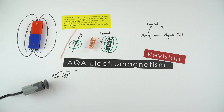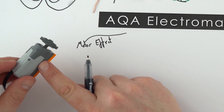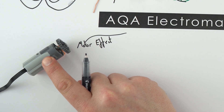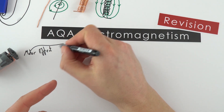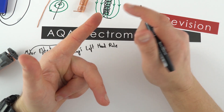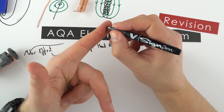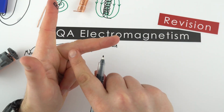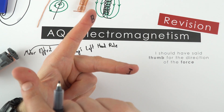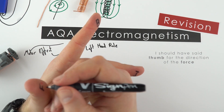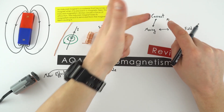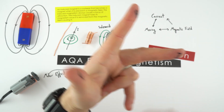The motor effect is put to good use in motors. Inside this motor we have some permanent magnets; when the current starts to flow, we get movement. We can use Fleming's left-hand rule: my first finger tells me the direction of the magnetic field — we give the magnetic field the symbol B. My second finger tells me the direction of conventional current, and my thumb tells me the direction of the force that a conductor will experience and therefore the direction it moves.